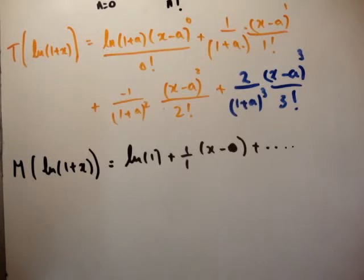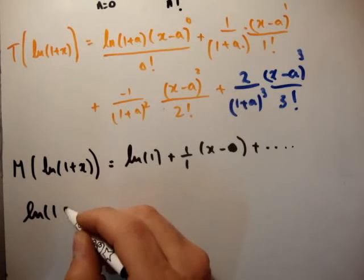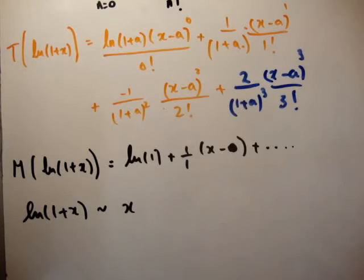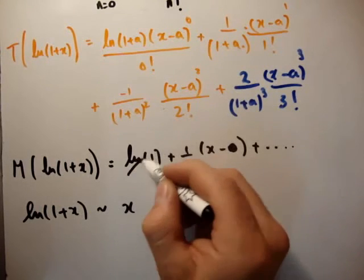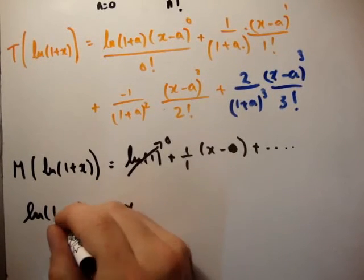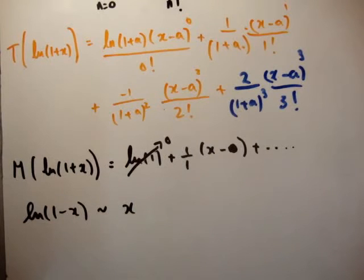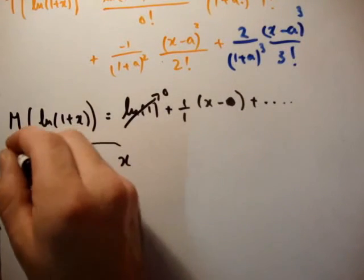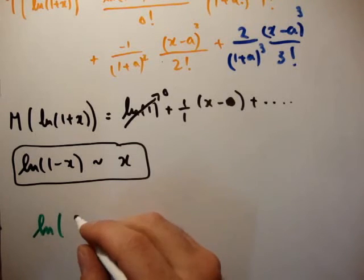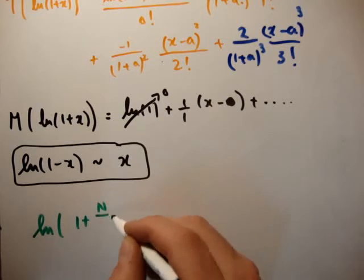So how do we get the natural logarithm? We now know that the natural logarithm of 1 plus x is approximately x, because natural logarithm of 1 is equal to 0. So we see the natural logarithm of 1 plus x is approximately x. The natural logarithm of 1 minus x is also approximately x. So that's really all I've got to say about that.